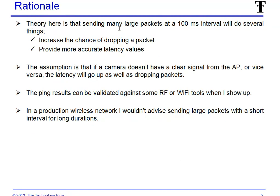The theory here is: if we send many large packets at a 100-millisecond interval, we can do several things. We increase the chance of dropping a packet, and we provide more accurate latency values because we're doing this more than once a second. The assumption is that if the camera doesn't have a clear signal from the access point, latency will go up as well as possibly dropping some packets. The ping results can be validated against RF or Wi-Fi tools when I show up. In a production wireless network, I would advise sending large packets with a short interval only for short durations. You don't want to run this 24/7 on a wireless network, because you will probably cause some problems.